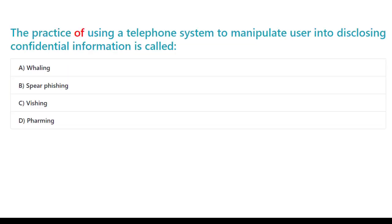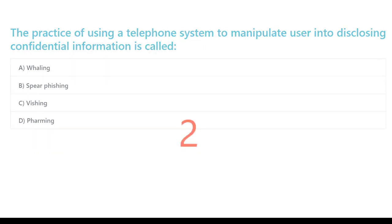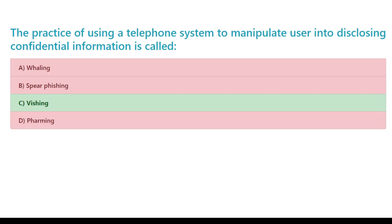The practice of using a telephone system to manipulate a user into disclosing confidential information is called: A. Whaling. B. Spear phishing. C. Vishing. D. Pharming. The correct answer is C. Vishing.